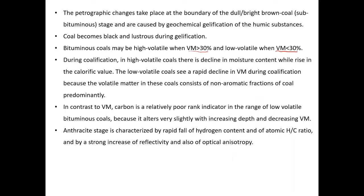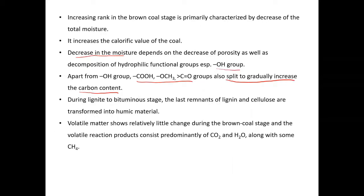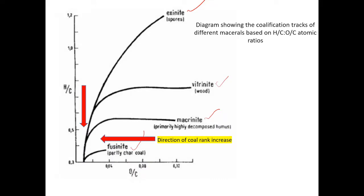The anthracite stage, as we all know, is the highest rank of coal. It is characterized by a rapid fall of hydrogen content and of the atomic H/C ratio, and by a strong increase of reflectivity and optical anisotropy. As there is a fall in the hydrogen to carbon ratio, the carbon content is increasing to a much higher value as we go towards the anthracite stage.